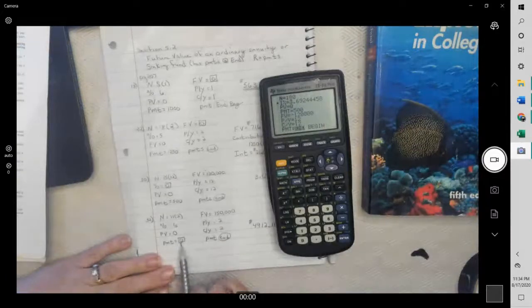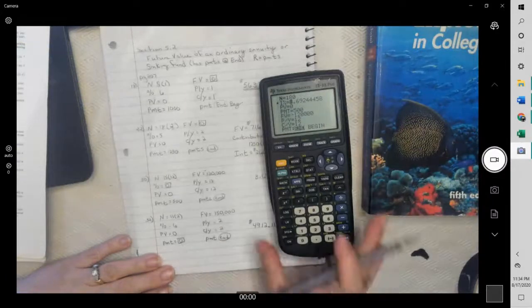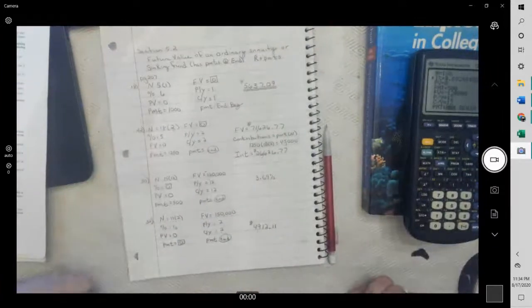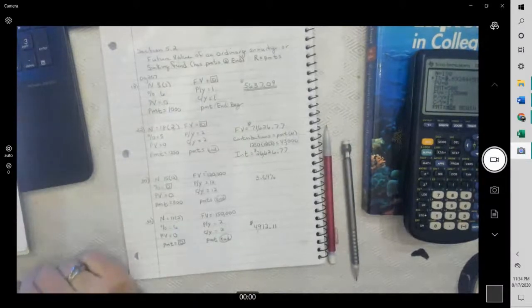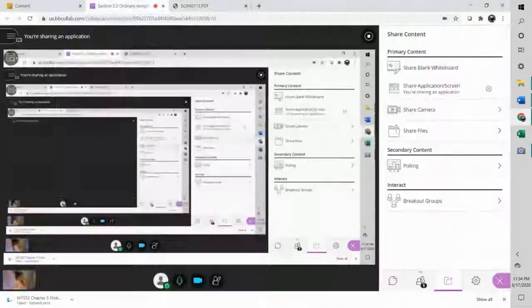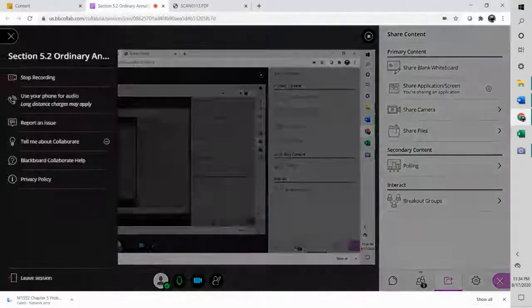So then if you plug this in and hit alpha and enter, you will get $4,912.11. So that's everything for ordinary annuities and sinking funds. Thank you, take care.